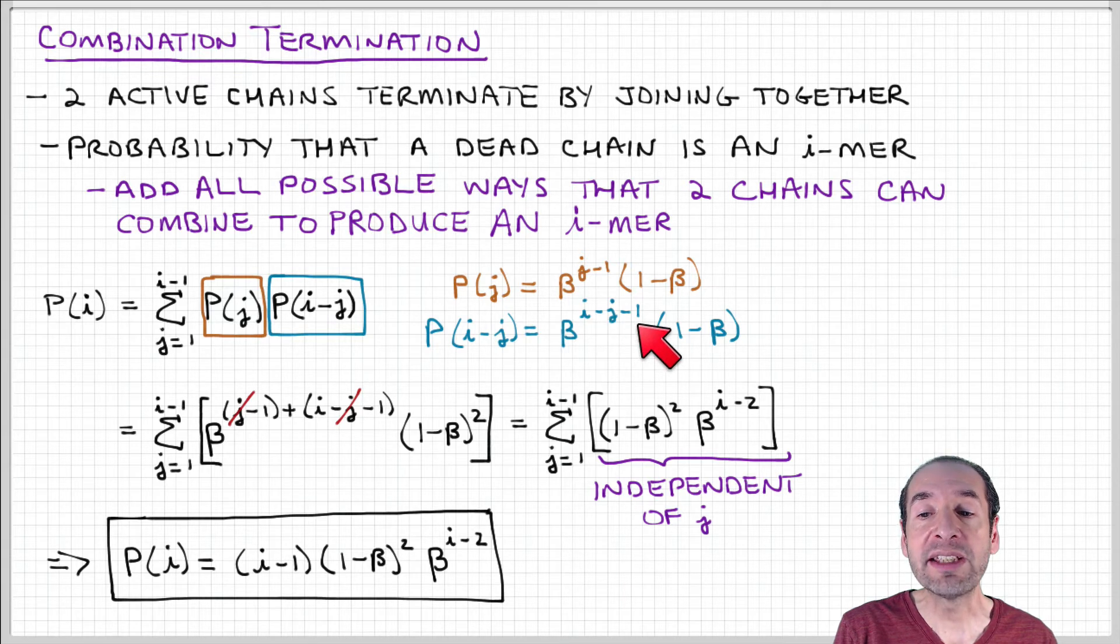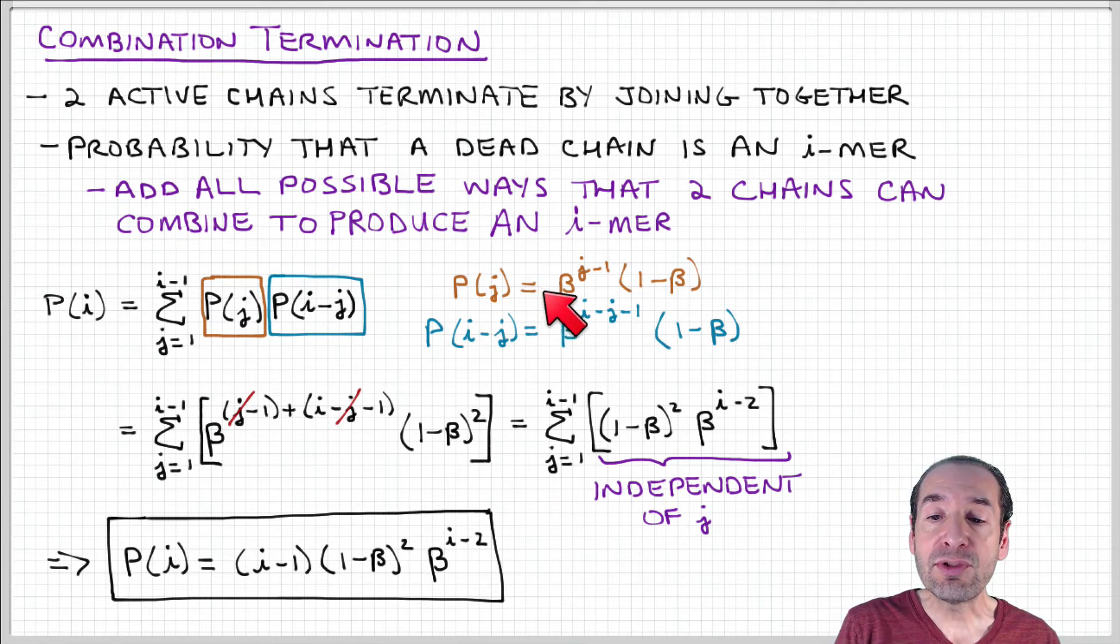So i minus j minus 1 in the exponent of beta, times 1 minus beta, which again is the probability that the next step will be a termination step. So now we can substitute these two quantities into the summation.